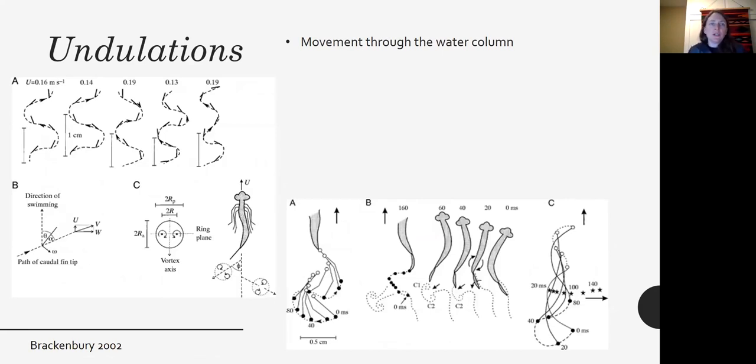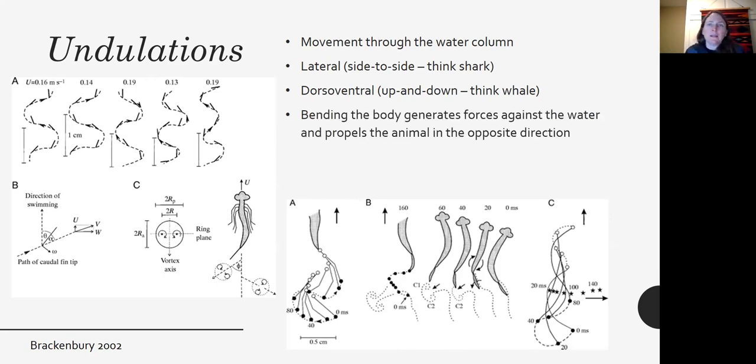Another way of moving is through undulating. So moving through the water column, you can either move side to side like a shark, or you can have an up and down undulation, more like a whale. The bending of the body as it undulates generates forces against the water and propels the animal in the opposite direction.